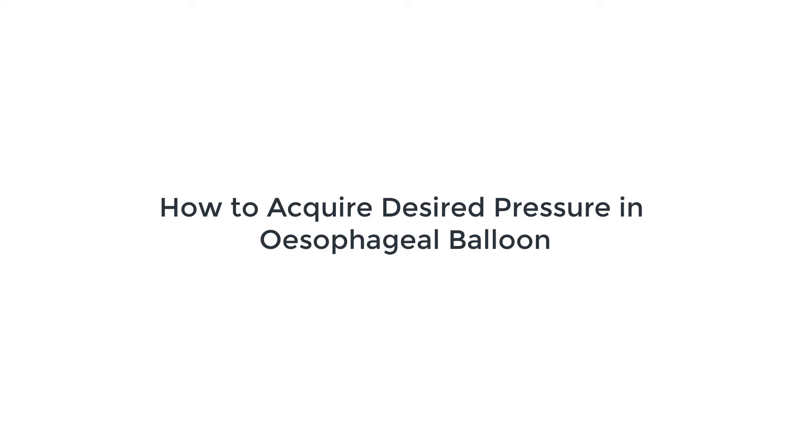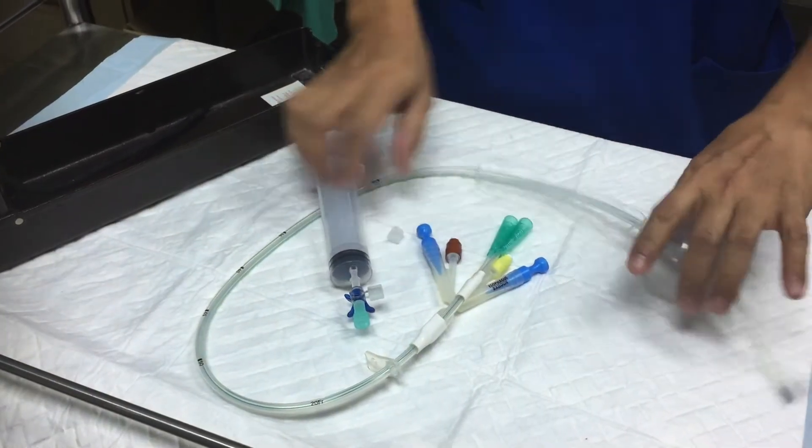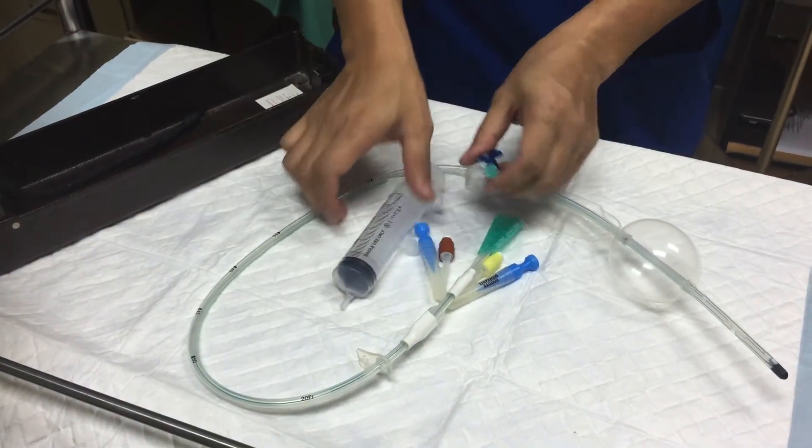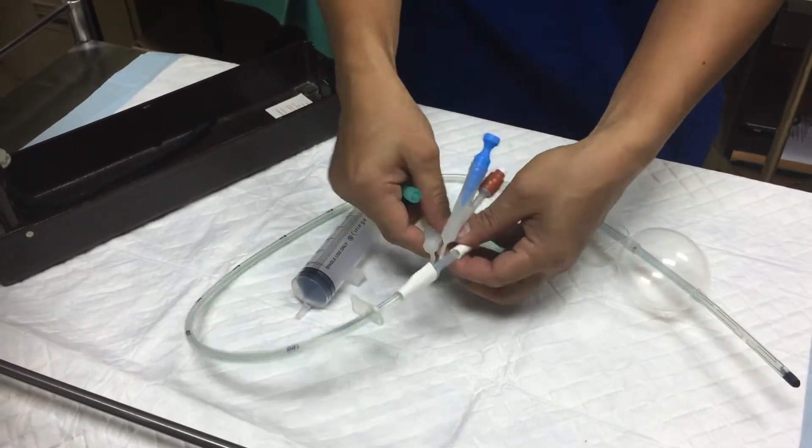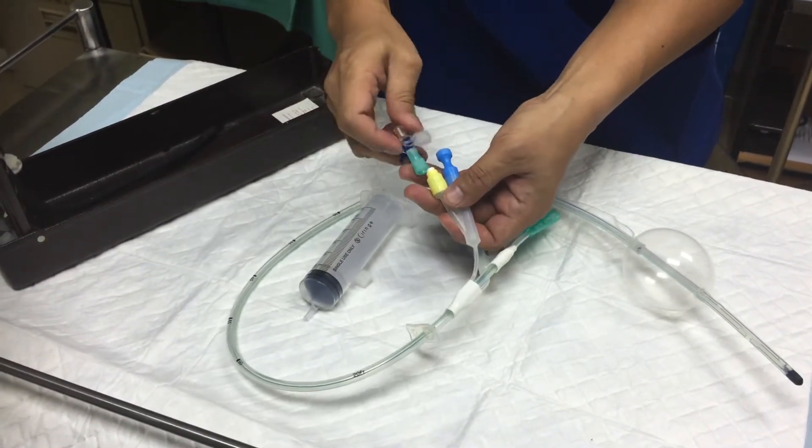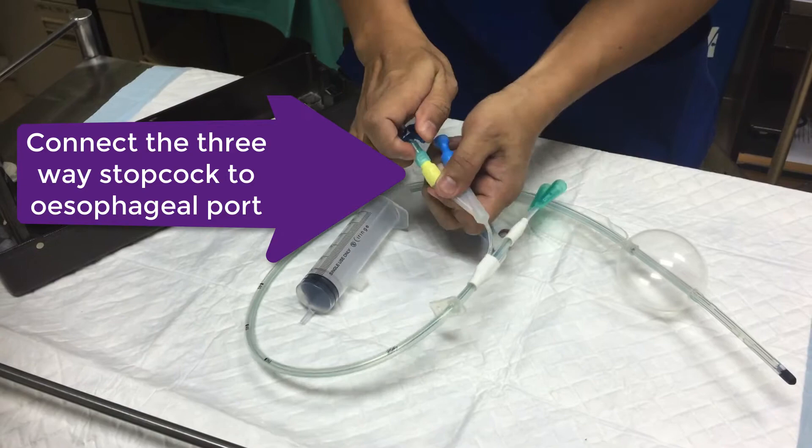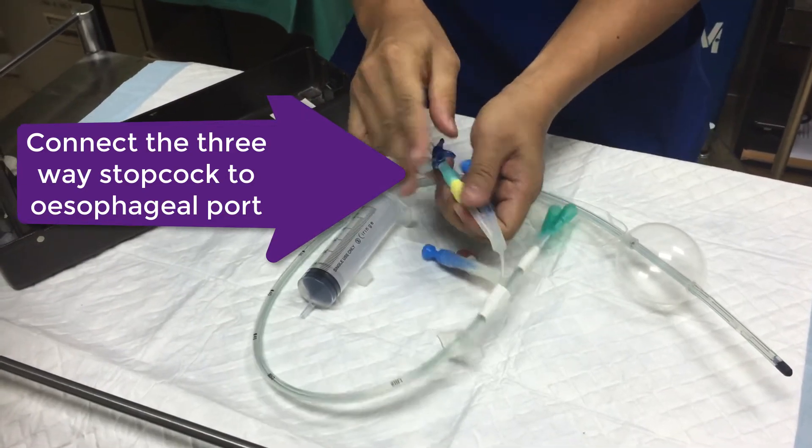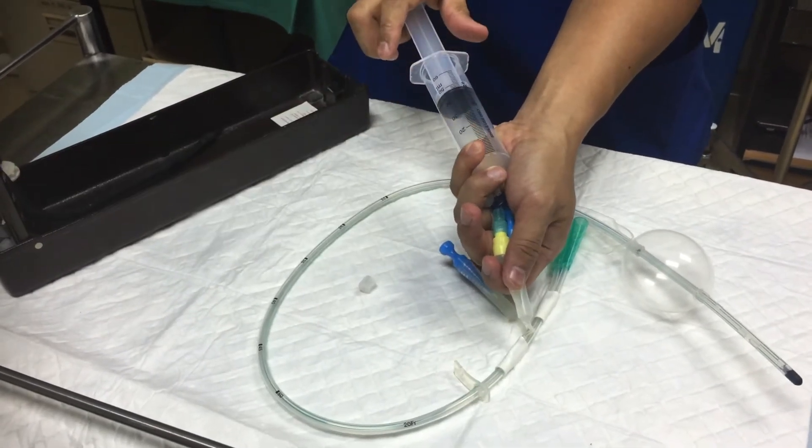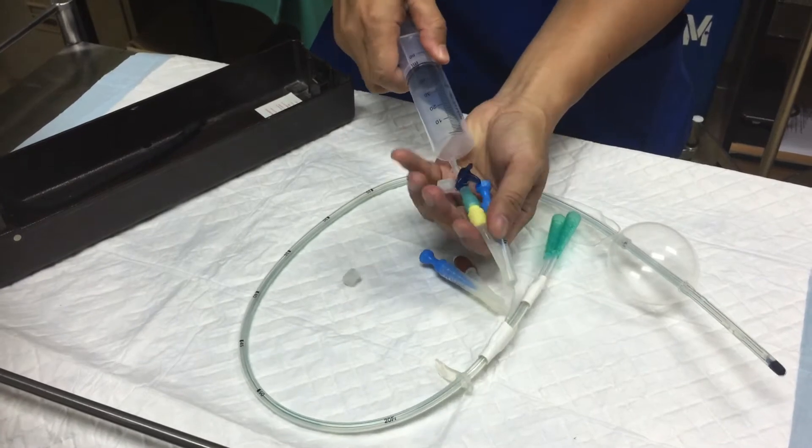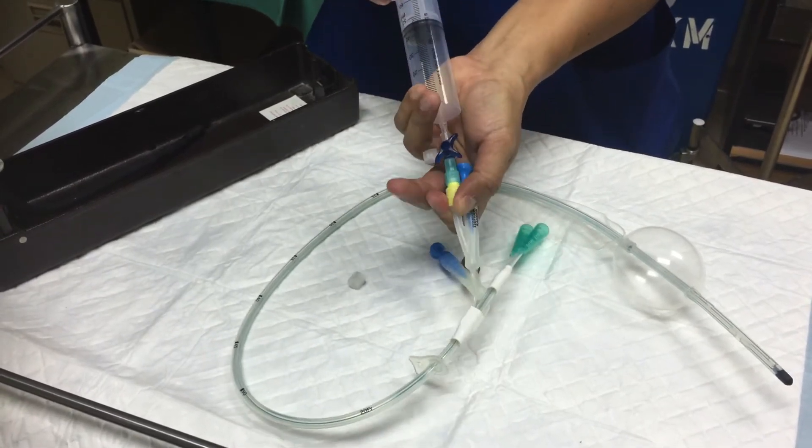In this video, we're going to show you how to connect the BP set to the esophageal port of the Sengstaken-Blakemore tube. You can see that the attendant now is connecting the three-way stopcock to the esophageal port, and this is followed by inflating the esophageal balloon with 100 to 150 cc of air.